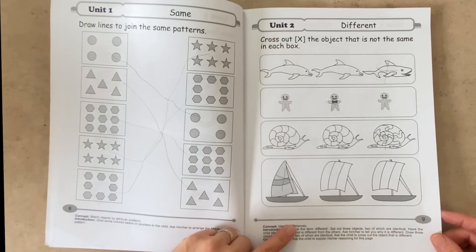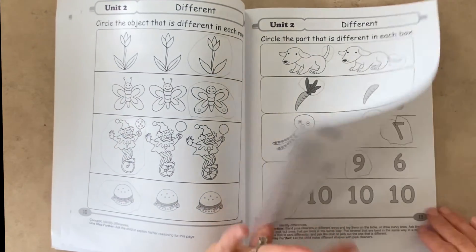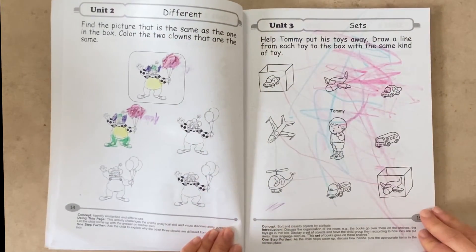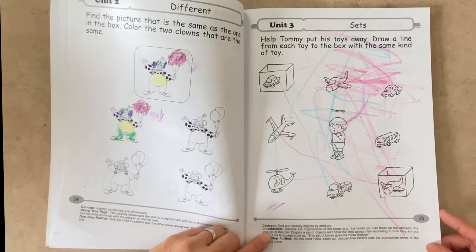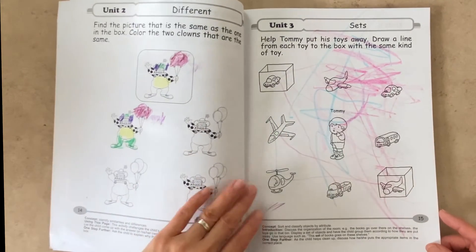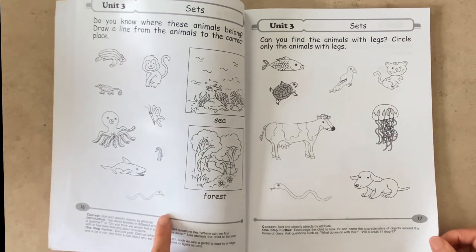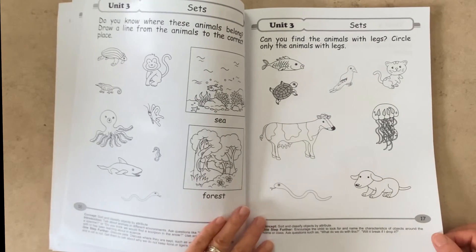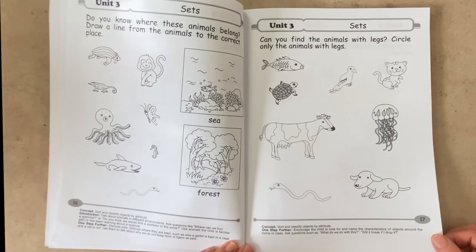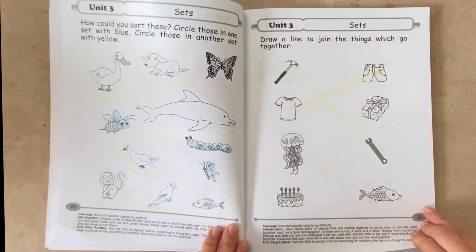Now on page nine, we're moving on to identifying differences. And then page 15, we are starting to identify sets. So here we're identifying road vehicles versus air vehicles. And here we're sorting animals from the sea and from the forest. And here we're finding animals that have legs and animals that don't have legs. And we're continuing with the sets.